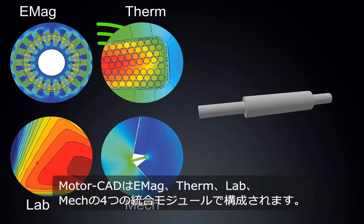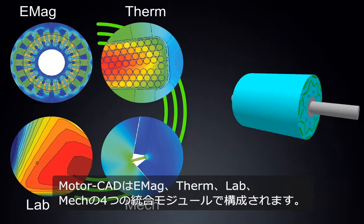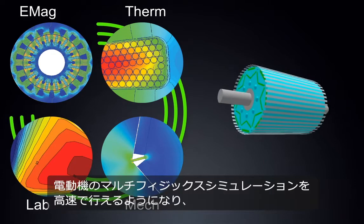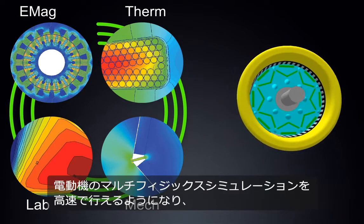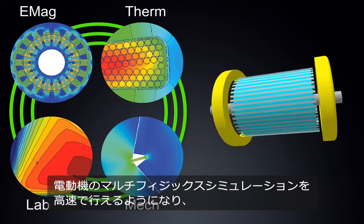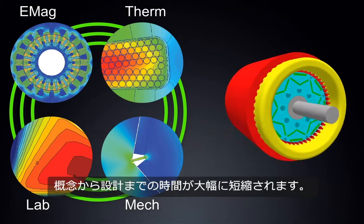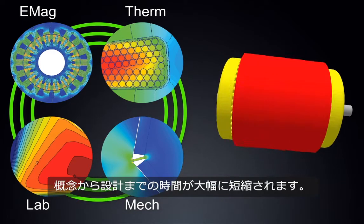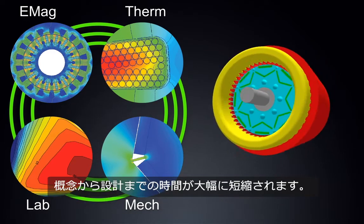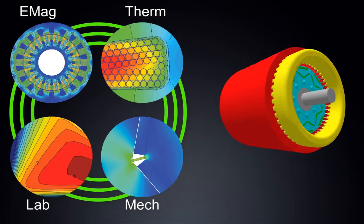MotorCAD's four integrated modules — EMAG, Therm, Lab and Mechanical — enable fast multi-physics simulations of electric machines, accelerating the path from concept to design.